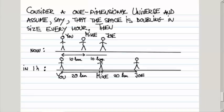Then you would say that Mike's speed relative to you is 10 kilometers per hour because he has moved 10 kilometers from a distance of 10 to the distance of 20 in one hour. Now, at the same time, Joe has moved 20 kilometers in the space of one hour. Initially, the distance between you and Joe was 10 plus 10 is 20 kilometers. Now it's 20 plus 20 is 40 kilometers. Joe has moved 20 kilometers relative to you. And you would say, well, Joe is moving away from me at twice the speed.